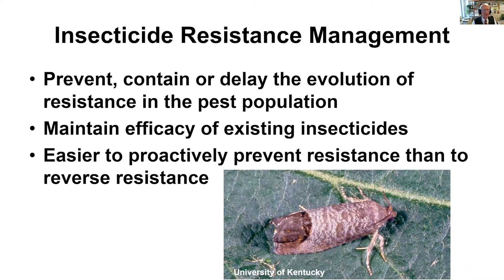Insecticide resistance management is an effort to prevent that evolution of resistance in the pest population, or at least contain it, and if not prevent it, at least delay it. What that does is keep effective insecticides working for you — as long as insects are not resistant to that insecticide, it's a good choice to use. We stress prevention because it's easier to prevent resistance than to reverse it after it has already happened.